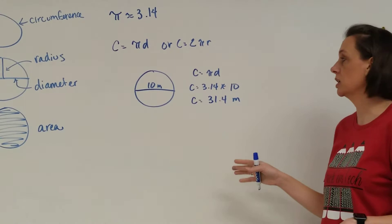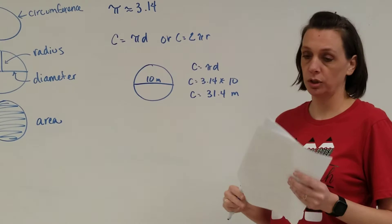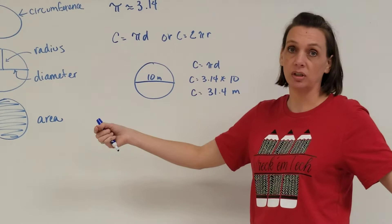centimeters, inches, yards, whatever. It's not going to be squared or cubed because it's just, if you took a piece of ribbon to go around, we could straighten it out and make a circle. So it just gets a basic unit.